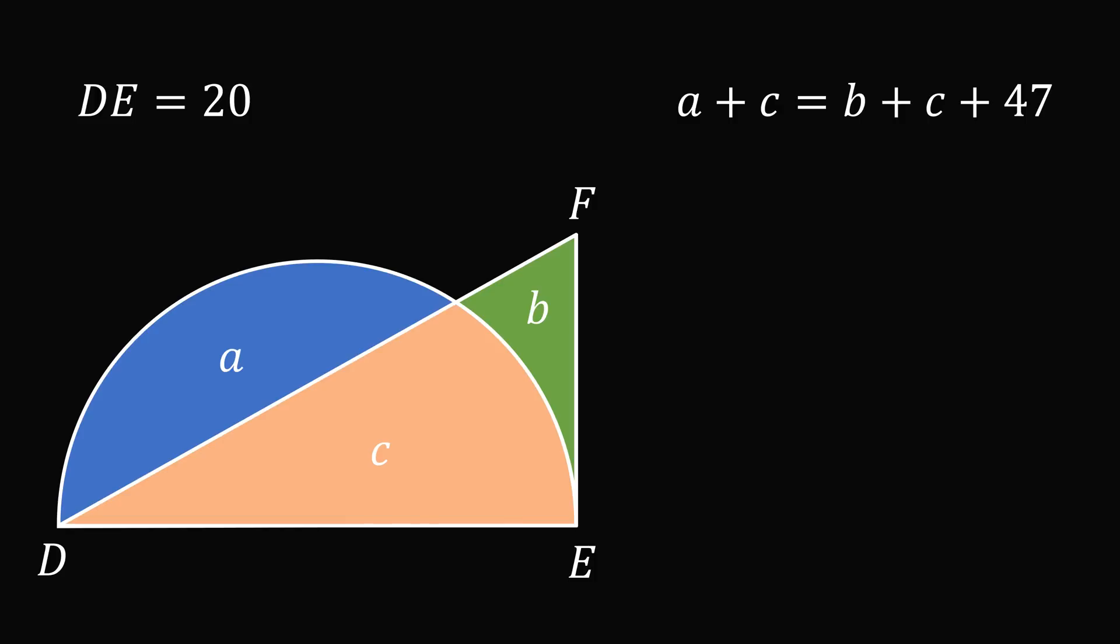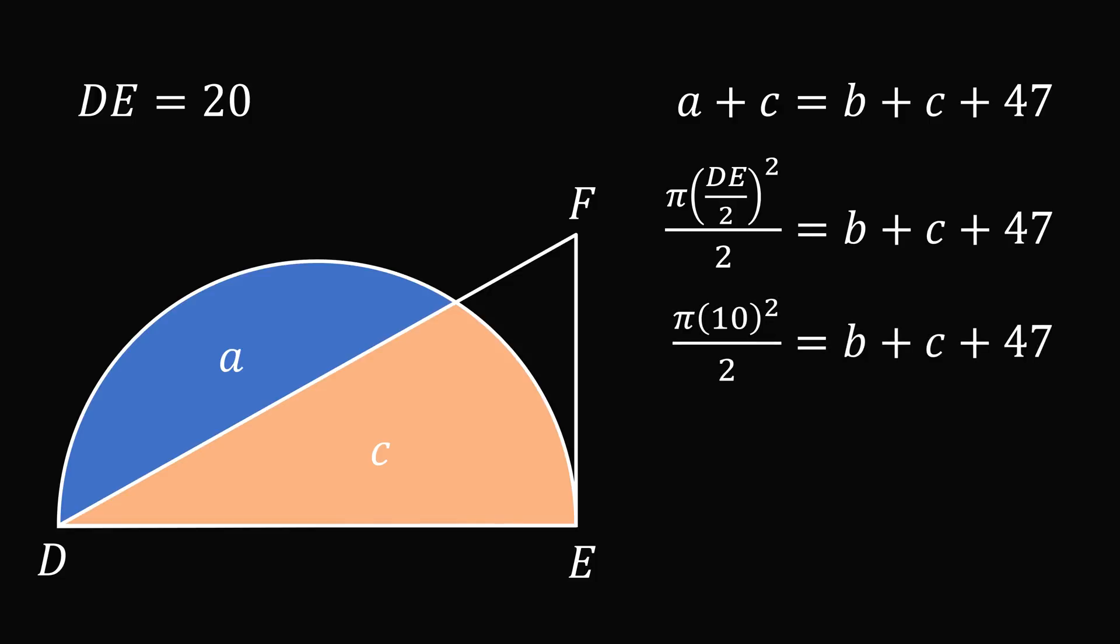But what is A plus C? It's exactly the area of the semicircle. The area of the semicircle is equal to πR² over 2. In this case, R is equal to DE over 2, which will be equal to 10. So the area of the semicircle is 10² π all over 2, which is equal to 50π.